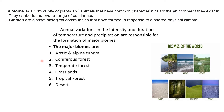A biome is a community of plants and animals that have common characteristics for the environment they exist in. For example, in a desert region, the camel (an animal) and cactus (a plant) both have the same characteristic feature — they have the potential to retain water because there is a lack of water in the environment. Biomes are distinct biological communities that have formed in response to a shared physical climate.